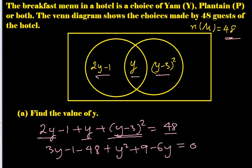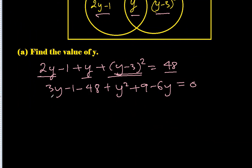Let's simplify now. y² will be alone, but 3y minus 6y is minus 3y. This is minus 49 plus 9 is minus 40 = 0.